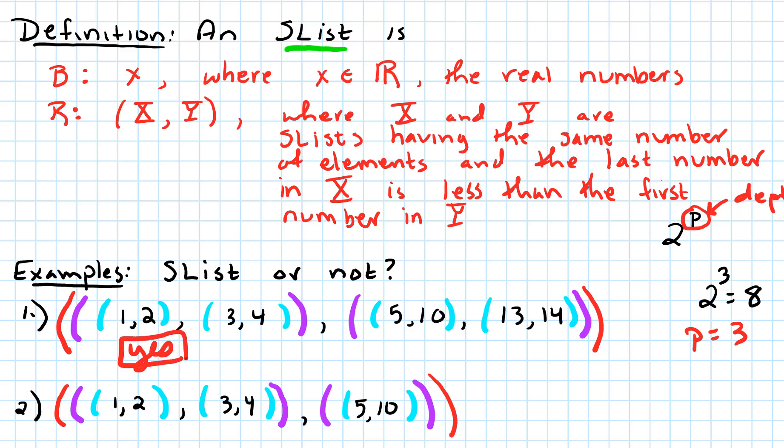The example number two is not an S-list, and notice it's not an S-list because over here, we had two elements sitting in that set of parentheses, and then we only had one over here, so this is not an S-list.